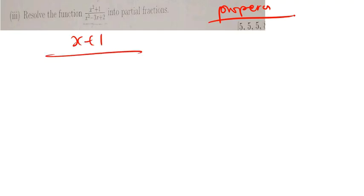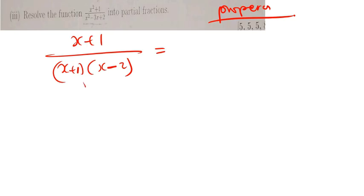For partial fraction, there are only two things you need to know: proper fraction and improper fraction. A proper fraction is one where, for example, you have x plus 1 on top, and on the denominator maybe (x+1)(x-2). That is what we call a proper fraction — a situation where the smaller degree is on top and the bigger degree is on the denominator.